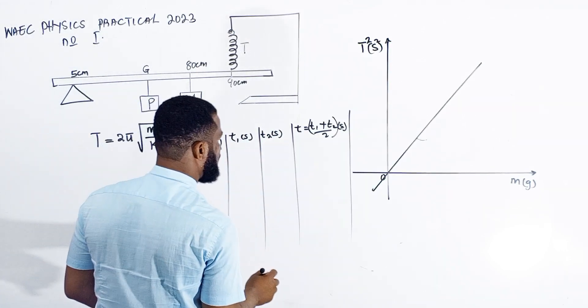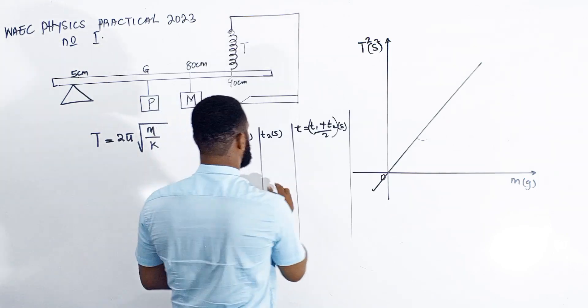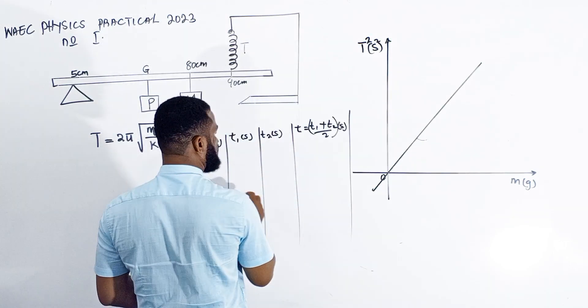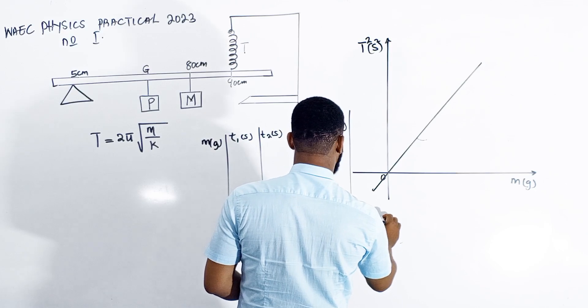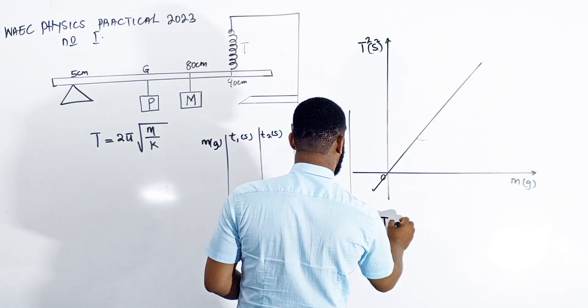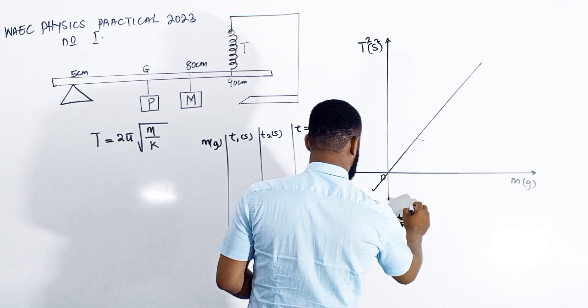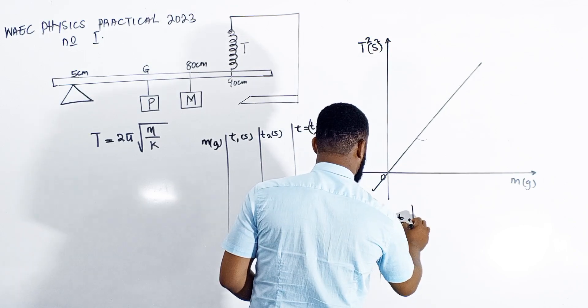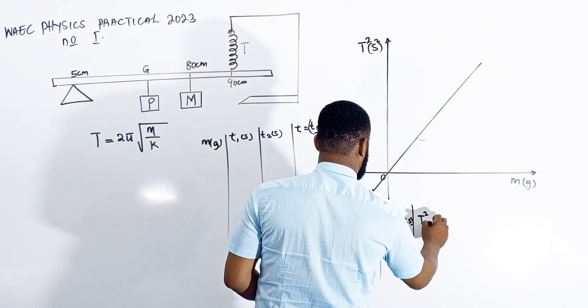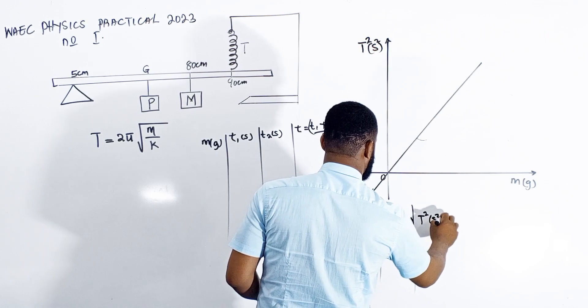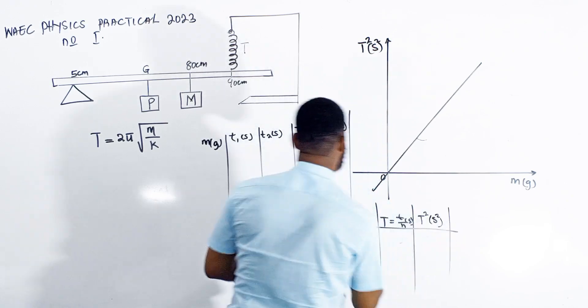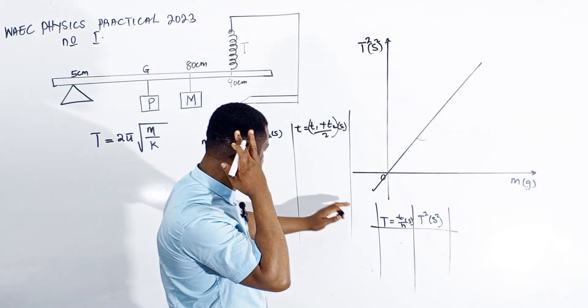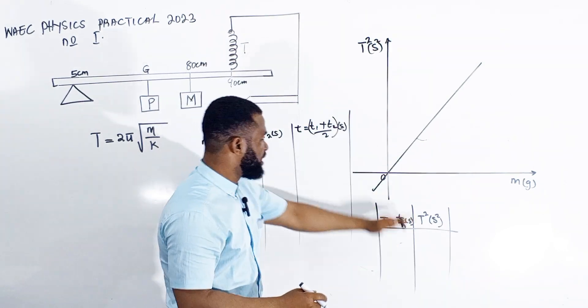Then you go further to have capital T = t/N in seconds, and then T² which is also in seconds squared. The space constraint made me continue the table here.